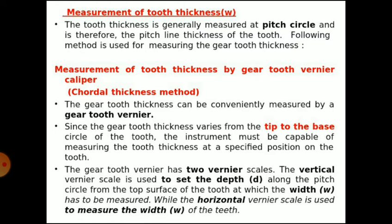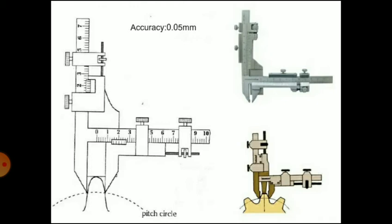The gear tooth vernier caliper consists of two perpendicular vernier arms with a vernier scale on each arm — a vertical arm and a horizontal arm. One arm is used to measure the thickness of the gear teeth and the other for measuring depth. The caliper is set so that it slides on the top of the tooth and the lower ends of the caliper jaws touch the sides of the tooth at the pitch line. The reading on the horizontal vernier scale gives the chordal thickness W, and the reading on the vertical vernier scale gives the chordal addendum.